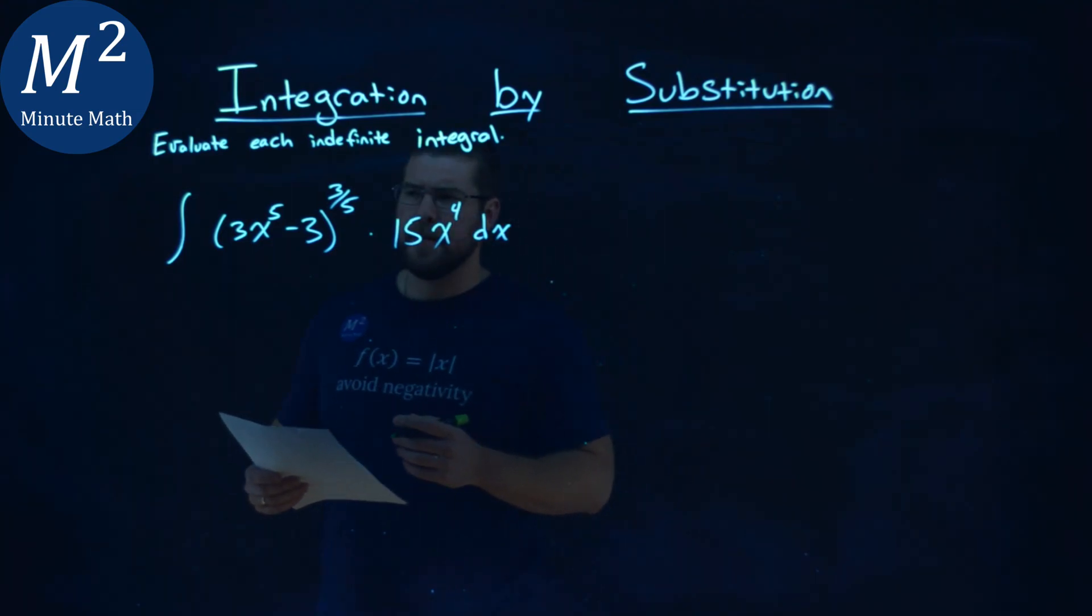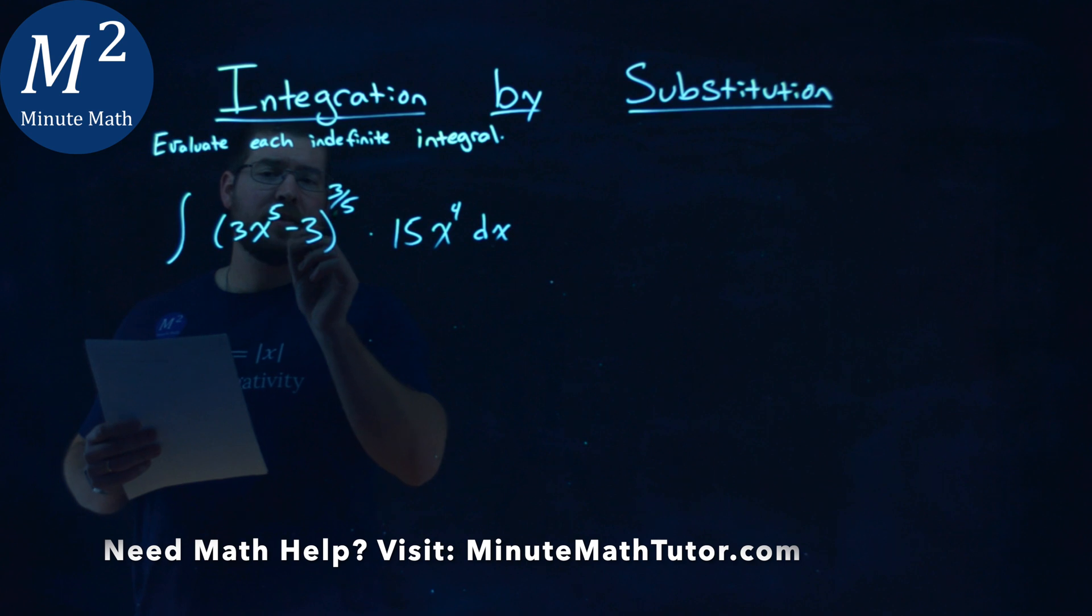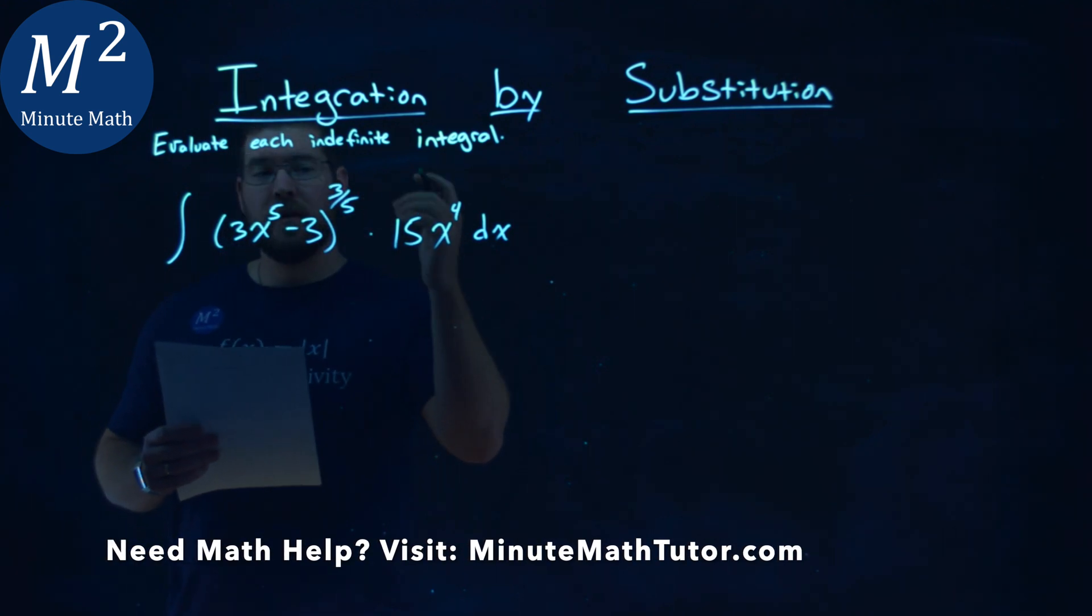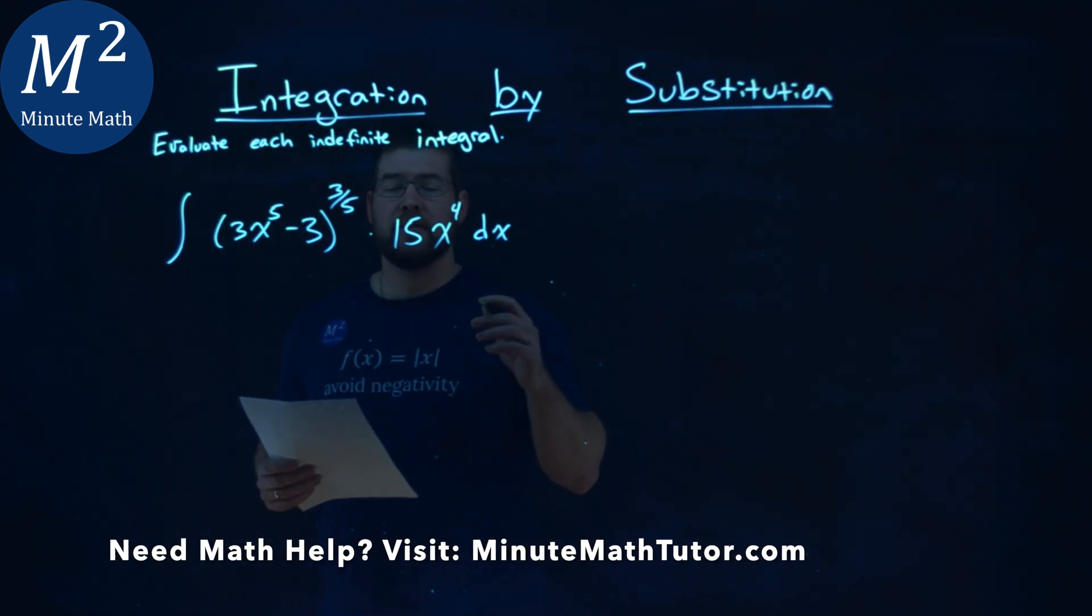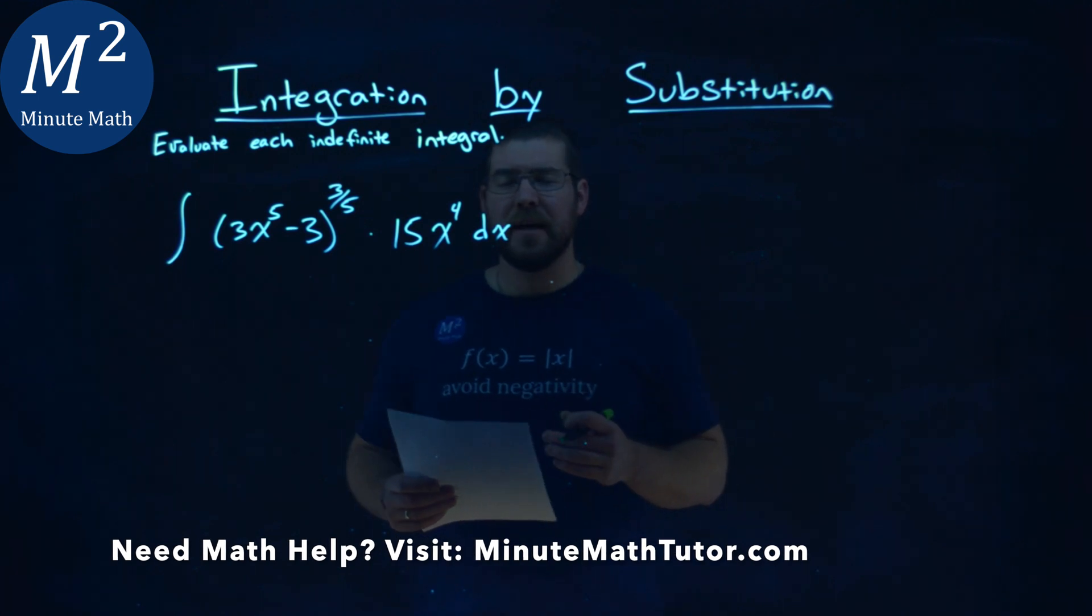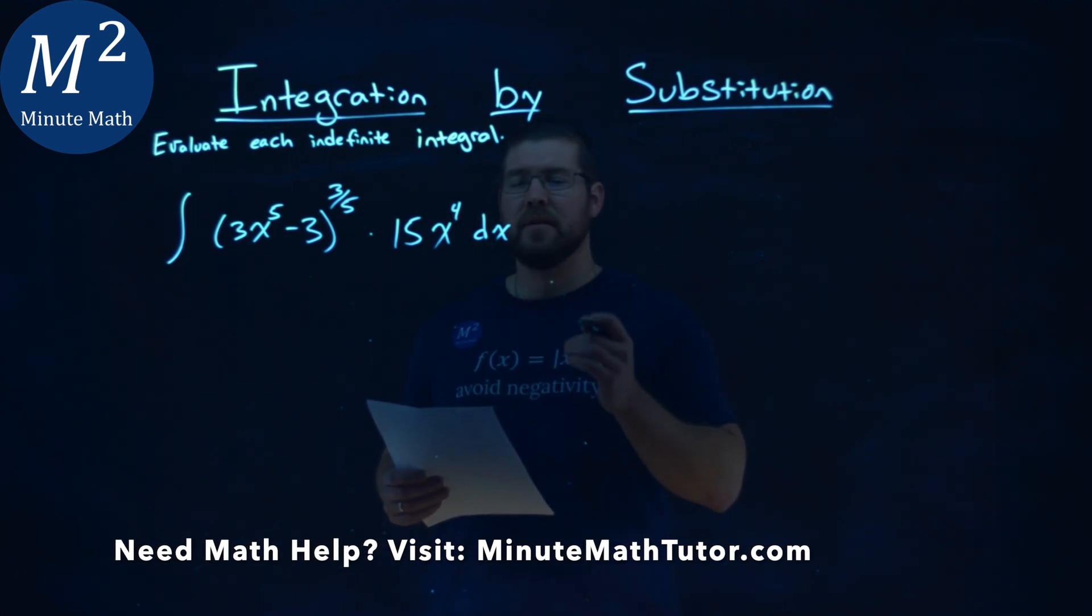We're given this integral right here, the integral of 3x to the 5th power minus 3 to the 35th power times 15x to the 4th power dx, and we have to evaluate this indefinite integral.